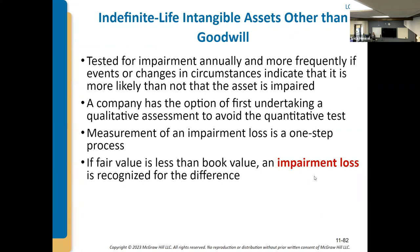First, you look at undiscounted cash flows to see if there is a loss in recoverability. If there is, then you ask: is the fair value less than the book value? If it is, then you recognize the impairment loss.